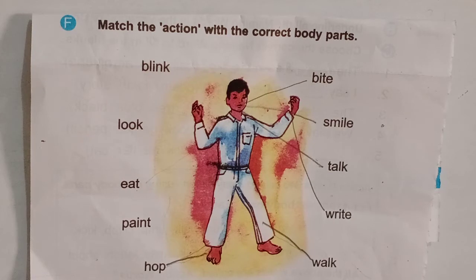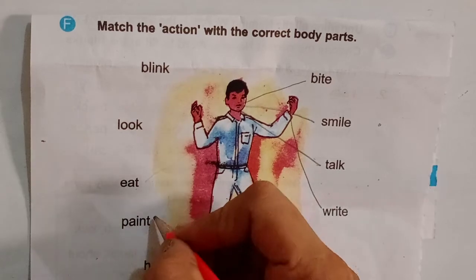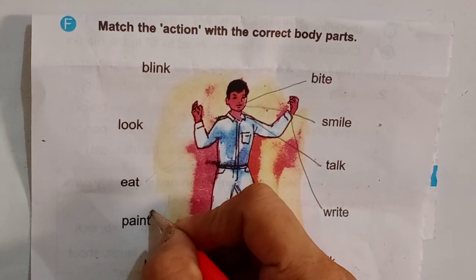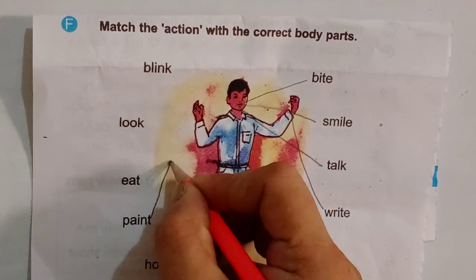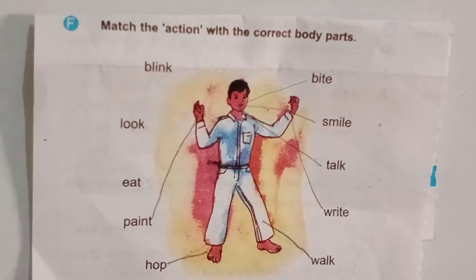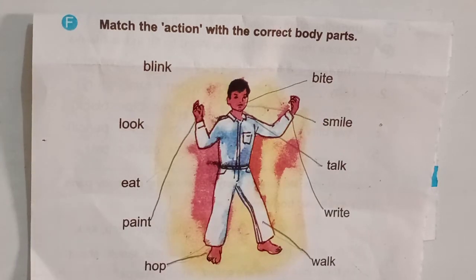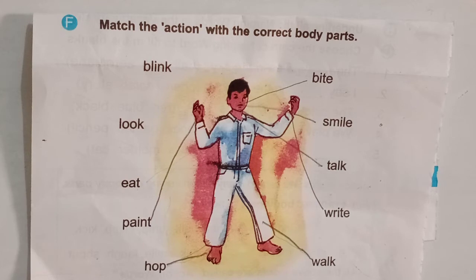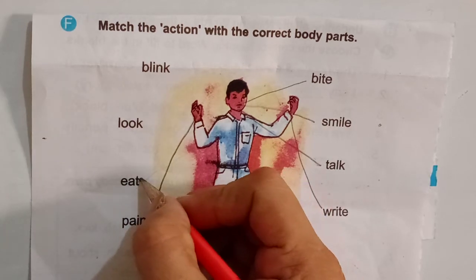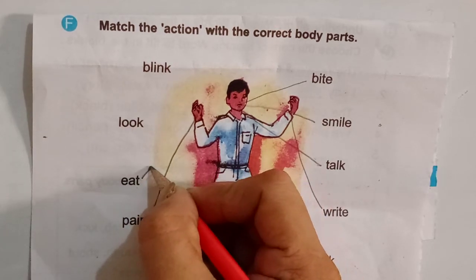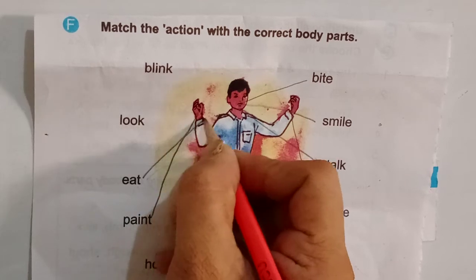Children, how can we paint? We can paint with our hands. Children, how can we eat? We can eat with our mouth. So you will match the word 'eat' to mouth.